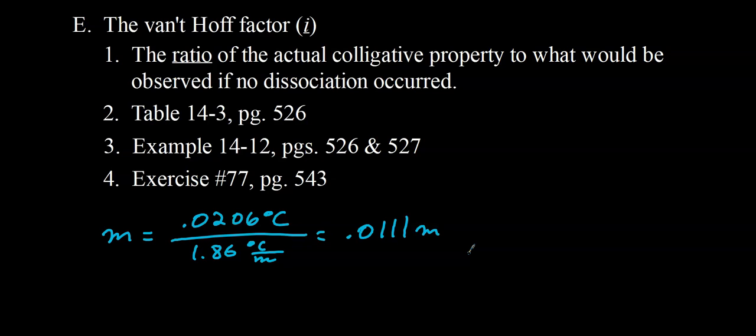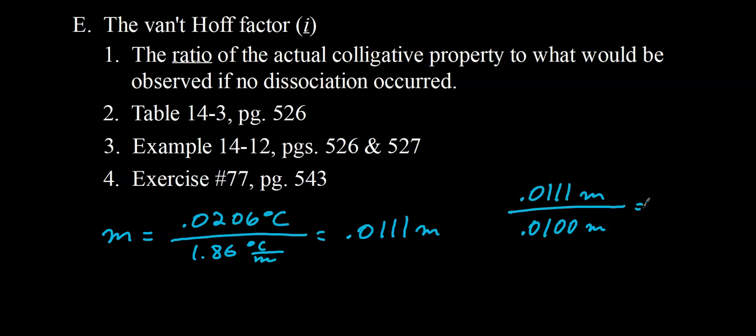To find the Van't Hoff Factor, take the actual concentration of ions in solution based on the properties — 0.0111 — and divide by the advertised concentration, 0.0100. That gives a Van't Hoff Factor of 1.11, meaning for every one mole dissolved, you produce a little more than a mole of particles. For weak electrolytes like a weak acid, the particles in solution include the dissociated H⁺ ions, the anion A⁻, and the unionized acid molecules — essentially three types of particles all contributing to the change in freezing point.